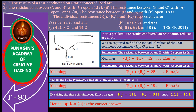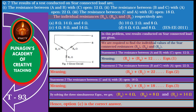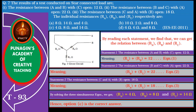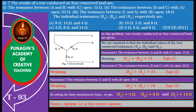Friends, this problem is also very simple. In this problem, test results conducted on a star-connected load are given. We are required to find the individual values of the star-connected resistances RA, RB, and RC. By reading each statement, we find we can get the relation between RA, RB, and RC. Consider statement 1: the resistance between A and B with C open is 12 ohm, meaning RA plus RB equals 12.